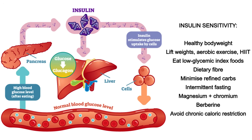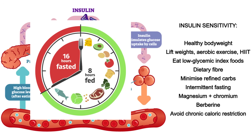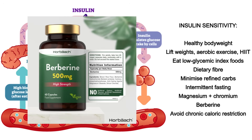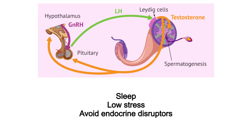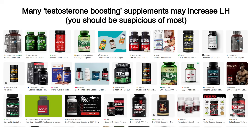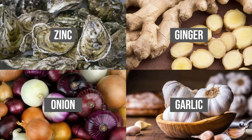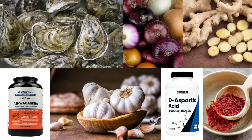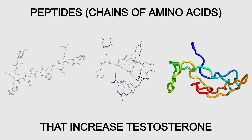Maintain insulin sensitivity by keeping a healthy body weight, lifting weights, doing aerobic exercise and HIIT, eating low glycemic index foods, having some fiber in your diet, minimizing refined carbs, and potentially using intermittent fasting. Get plenty of magnesium and chromium, and if insulin is a big problem consider supplementing with berberine. Some foods and supplements can directly boost LH — including zinc from oysters, ginger, onion, garlic, saffron, D-aspartic acid, and ashwagandha, all of which are reasonably well supported by the literature.